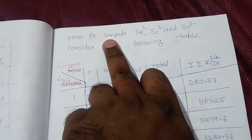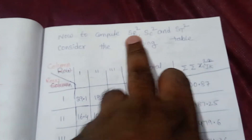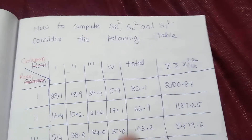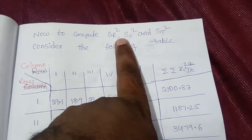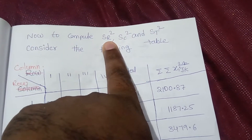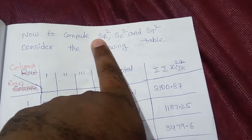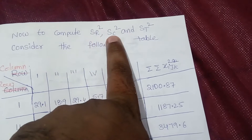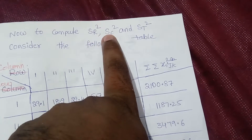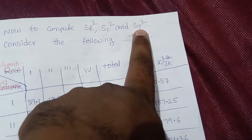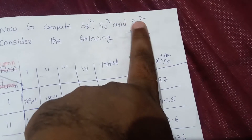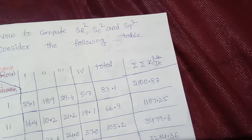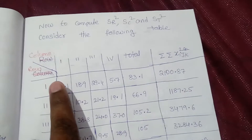Here SR² means row sum of squares (suffix R represents rows), SC² means column sum of squares, and ST² means total sum of squares. We will now set up the following calculation table, which has four rows and four columns, a total column Xi, and a column for the double summation of Xijk squared.